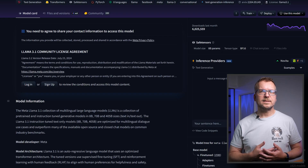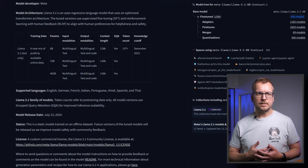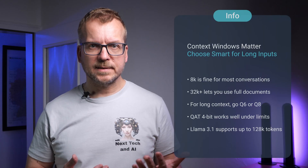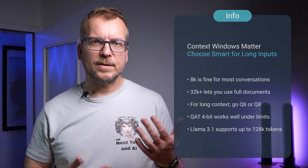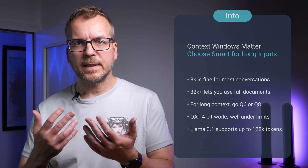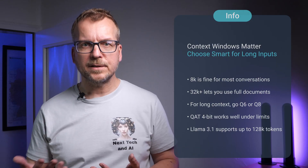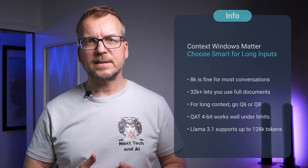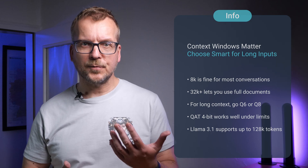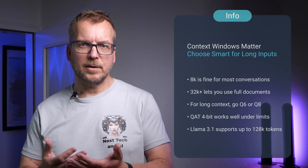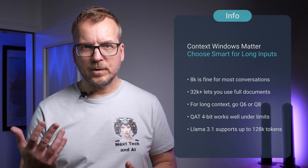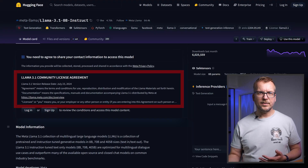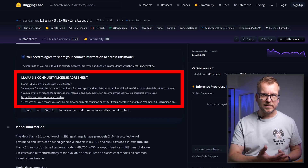Context length is how much text the model can remember in a single conversation — think of it like short-term memory. 8K tokens is decent for most chats. 32K+ is where you can paste entire documents and have meaningful discussions about them. If long context matters, bias toward Q6 or Q8, or use the Q8_0 4-bit when you need compression without the usual losses. Llama 3.1 supports up to 128K. License sanity check: if you build anything commercial, verify permissions before you download.